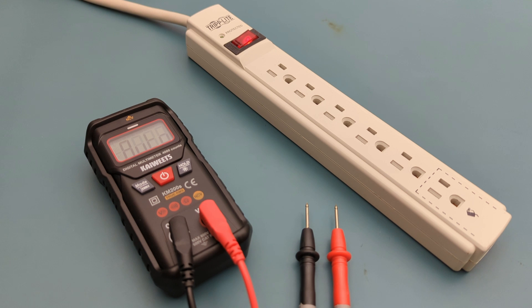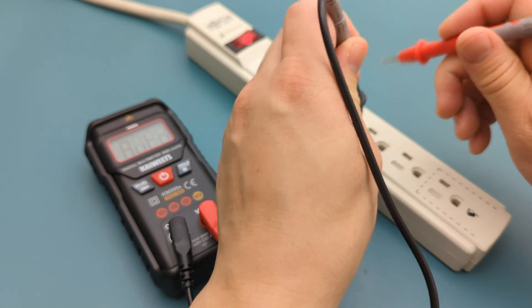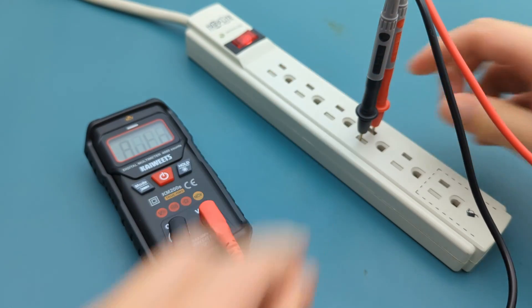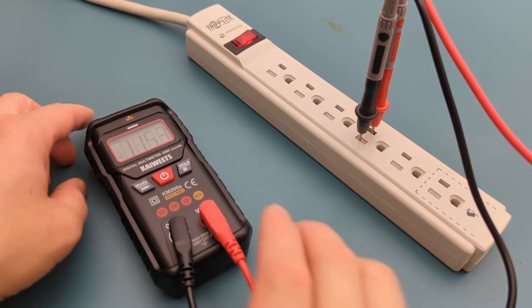The next step is to measure the AC voltage. I have a power strip plugged into the wall outlet. I'll plug the probe leads into the sockets. A reading of 115 volts is consistent with the typical voltage supplied by most US residential outlets.